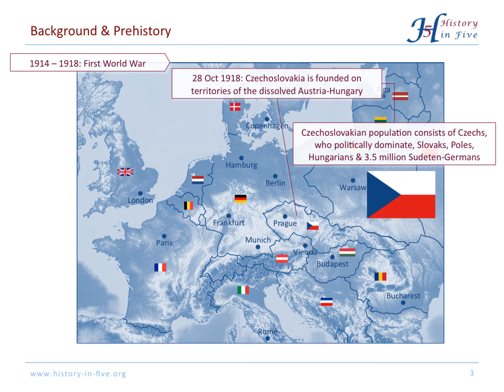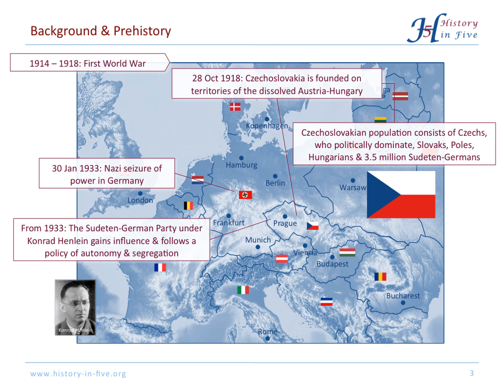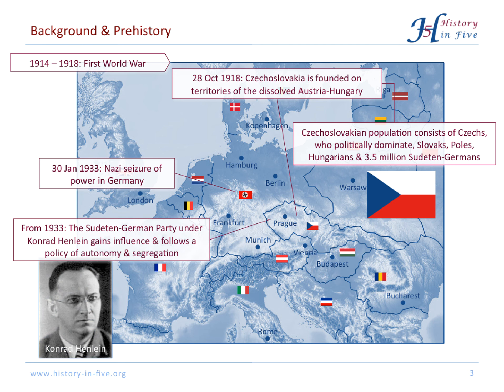In 1933 the Nazis took over in Germany, and now the aggressive policy of expansion started. 1933 was the same year when the Sudeten German party under Konrad Henlein gained influence. They followed the policy of autonomy and segregation, to say the least.